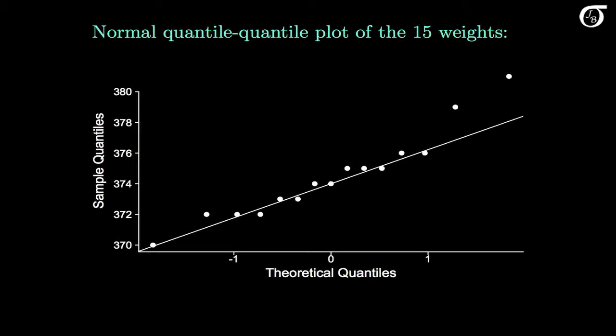Here's a normal quantile-quantile plot of the 15 weights. Recall that in normal quantile-quantile plots, if the points fall close to a straight line, then the data values are approximately normally distributed. Here most of the points lie very close to a straight line, but there are two points in the right tail that fall a little above the line. They are a little bigger than what we'd expect to see if we were sampling from a normally distributed population, but they are not extremely large. We might call them mild outliers or slight outliers.